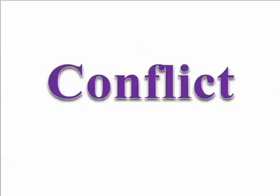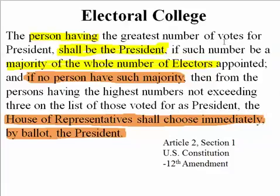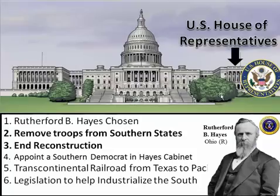Democrats were saying 'no, we won.' The U.S. Constitution states: 'The person having the greatest number of votes — a majority of the whole number of electors — shall be the president. If no person has such majority, then the House of Representatives shall immediately choose by ballot the president.' Since those 22 electoral college votes were being contested, they decided politically it should go to the House of Representatives to be determined, setting up a special electoral commission.